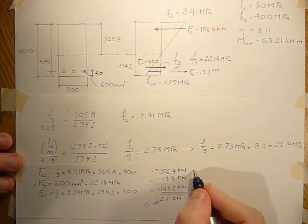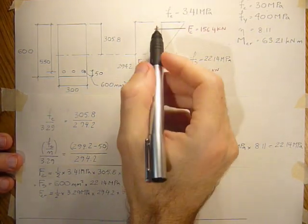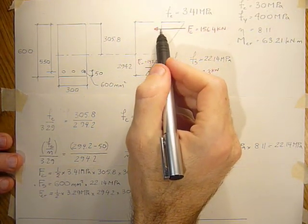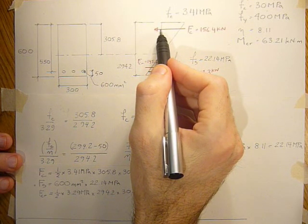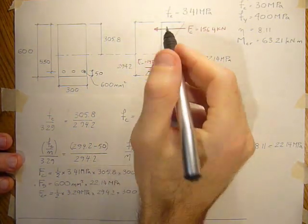So we're taking lever arms now. So if we multiply that force times the distance from the centroid of this stress distribution to the neutral axis, it's going to be, for a triangle, two-thirds of the height.